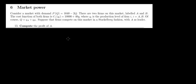Let's have a look at question six. Consider a market with the following demand function. There are two firms in this market, A and B. We have the cost function of each firm given here: 10,000 plus 40 times the quantity. The total quantity in the market depends on the quantity of company A and the quantity of company B.